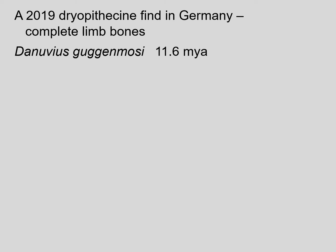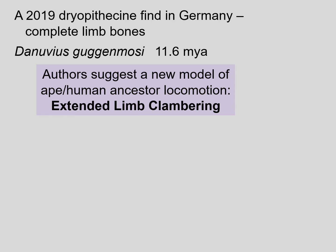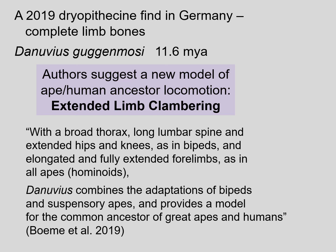In 2019, a new Dryopithecine find in Germany allows us to talk more about the locomotion of these early proto-apes, because they found a complete set of limb bones. The authors suggest a new model of early ape-human ancestor locomotion that they call extended limb clambering. With extended limb clambering, both the legs and the arms were equally important in moving around in the trees — with a broad thorax, a long lumbar spine, and extended hips and knees as in bipeds, combined with elongated and fully extended forelimbs as in all apes. This species combines the adaptations of bipeds and suspensory apes, and provides a model for the common ancestor of great apes and humans.